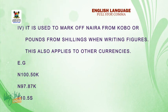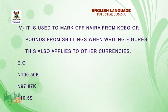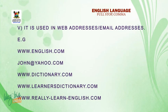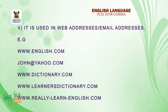97 naira, 75 kobo. 10 pounds, 5 shillings. Number five: it is used in web addresses or email addresses. E.g., www.english.com, john@yahoo.com.